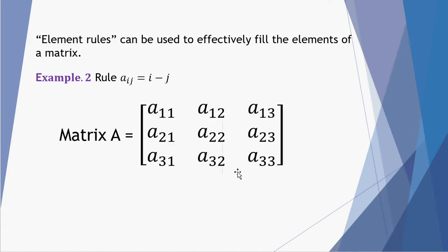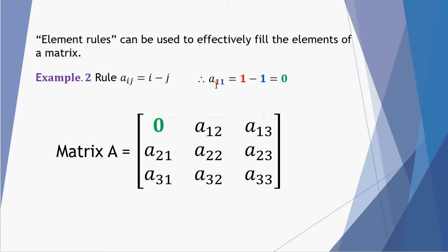Let's look at the second example. We have the same 3 by 3 matrix A with individual elements A 1 1 all the way to A 3 3. In this case the rule says each element A IJ is equal to I minus J — the row take away the column. When I is 1 and J is 1 — row 1 column 1 — 1 take 1 gives me 0.